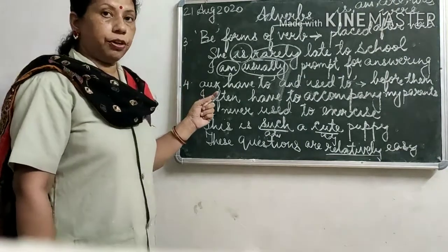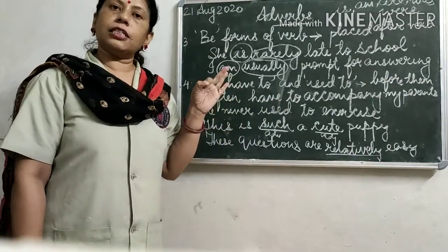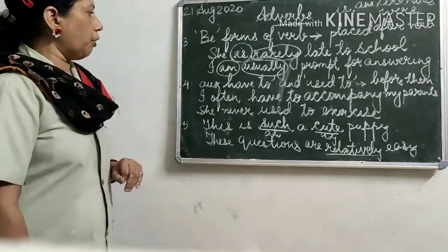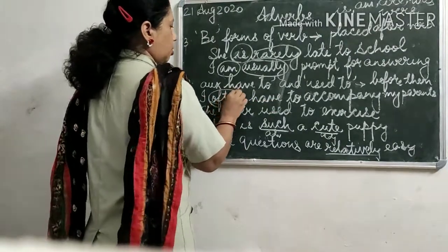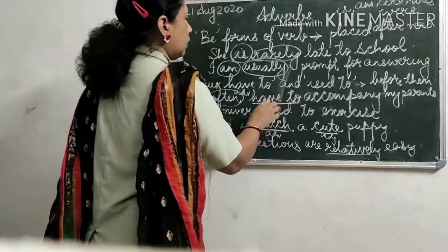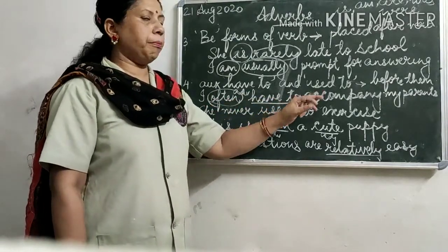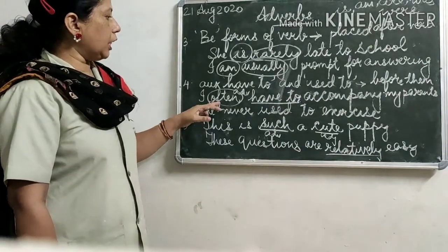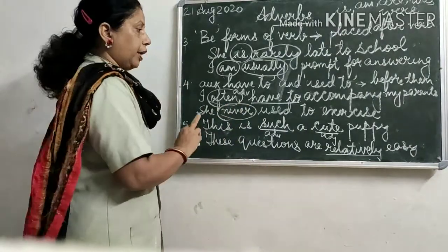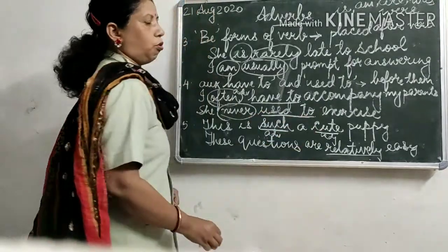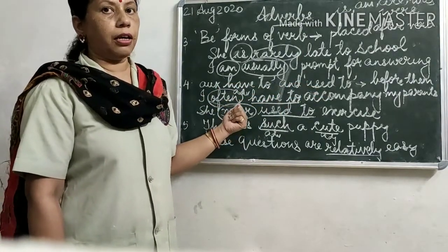When the auxiliary verbs 'have to' or 'used to' are used, the adverb is placed before them. For example: 'I often have to accompany my parents' — 'often' comes before 'have to.' And 'She never used to exercise' — 'never' is placed before 'used to.'